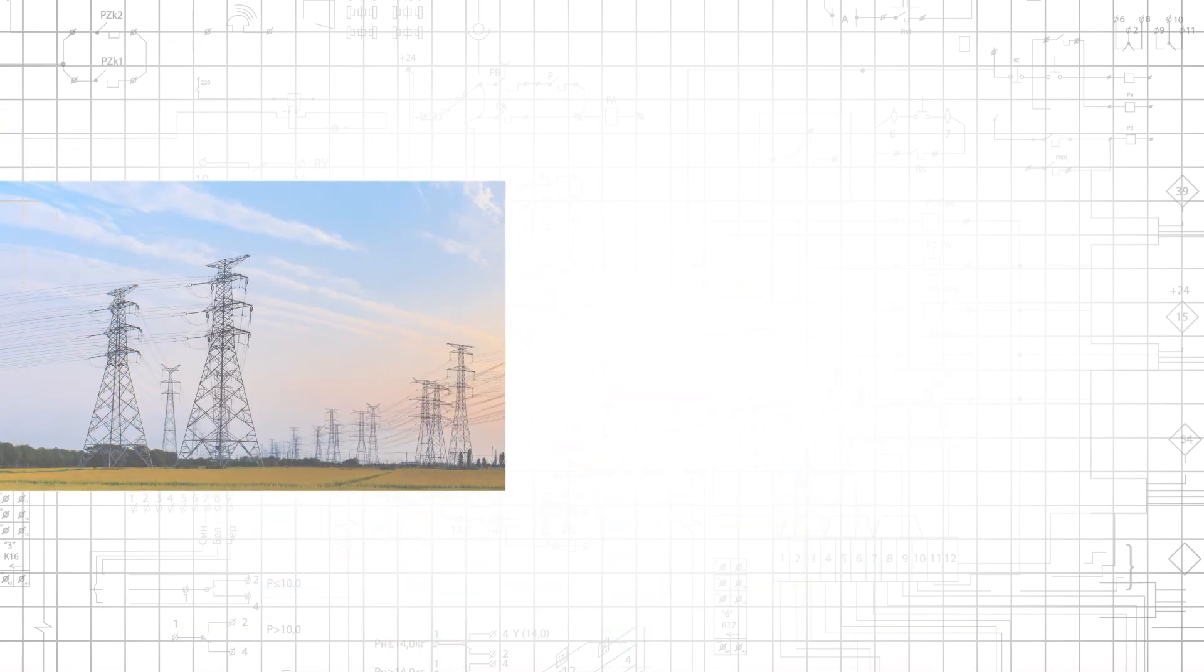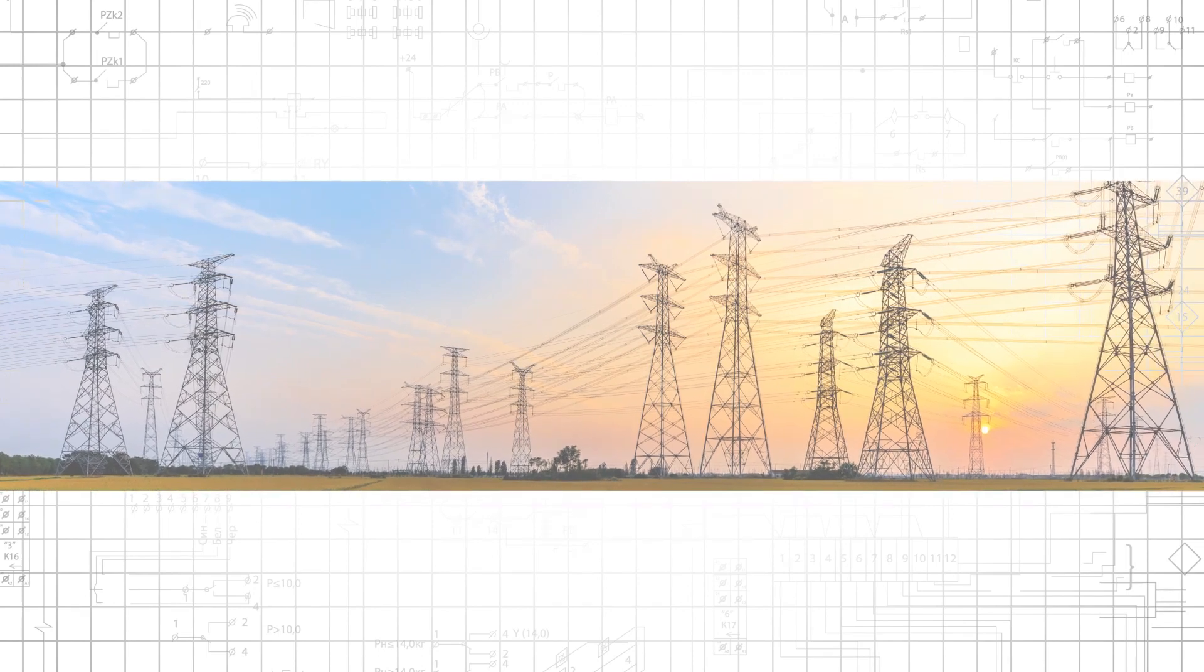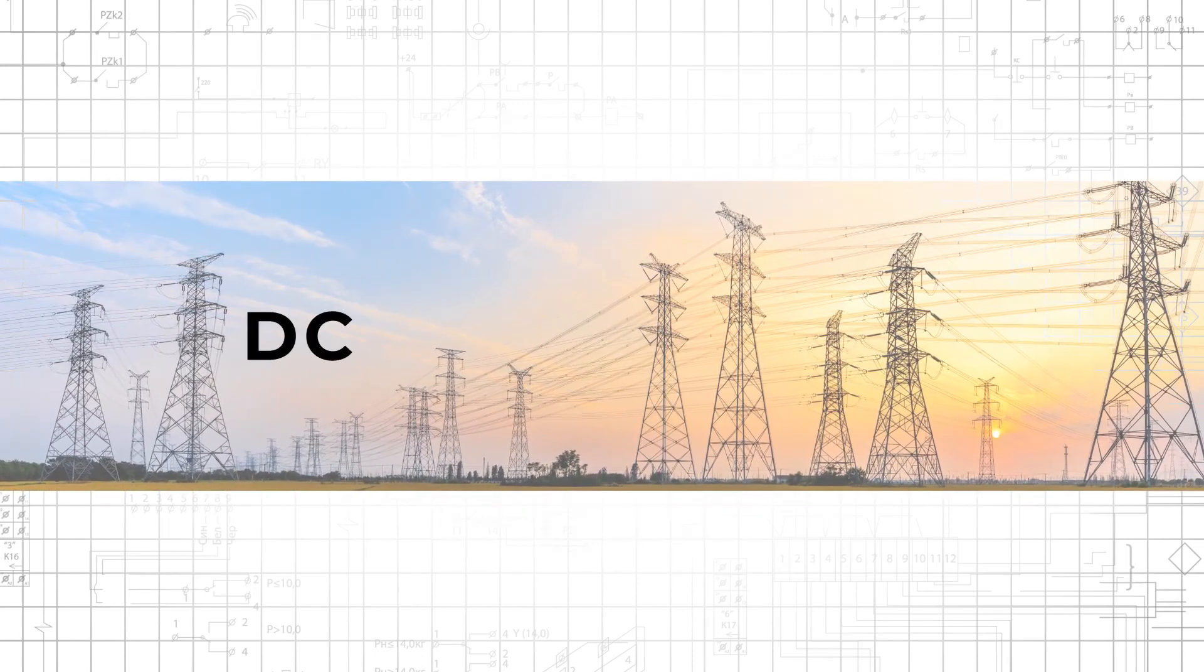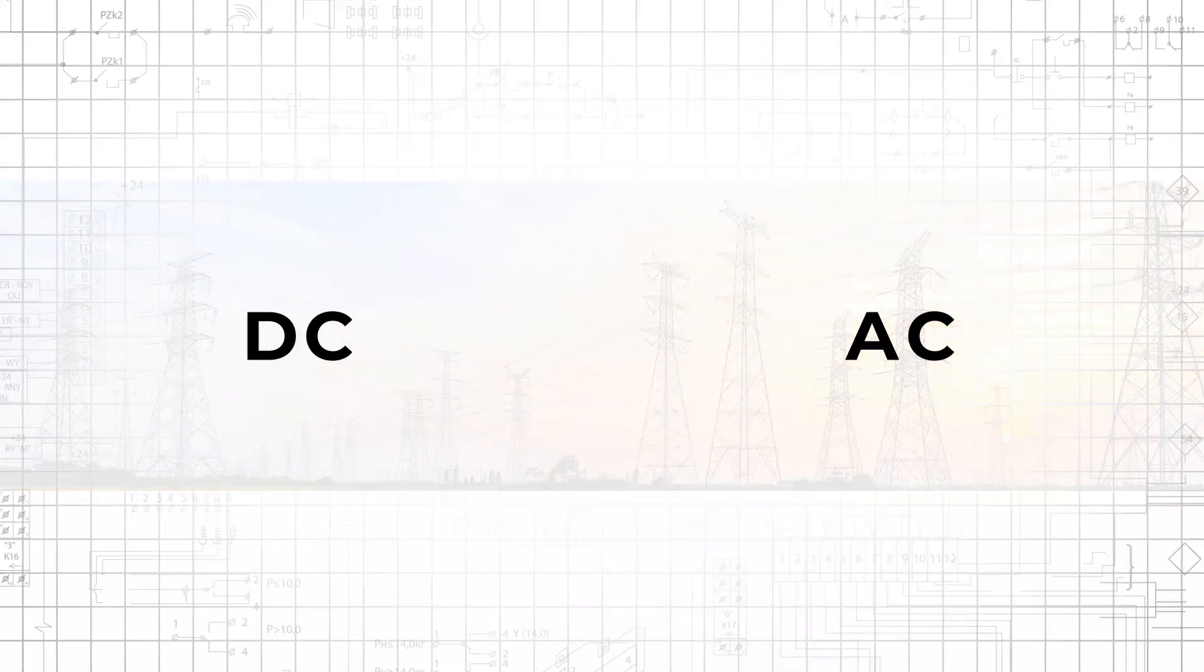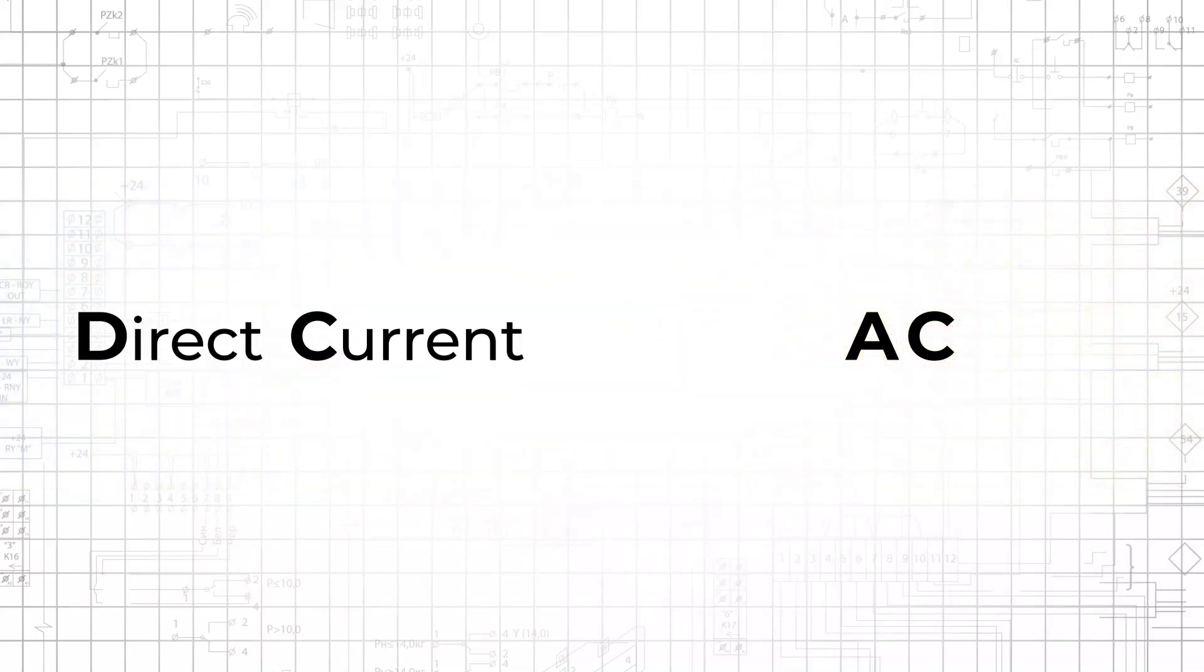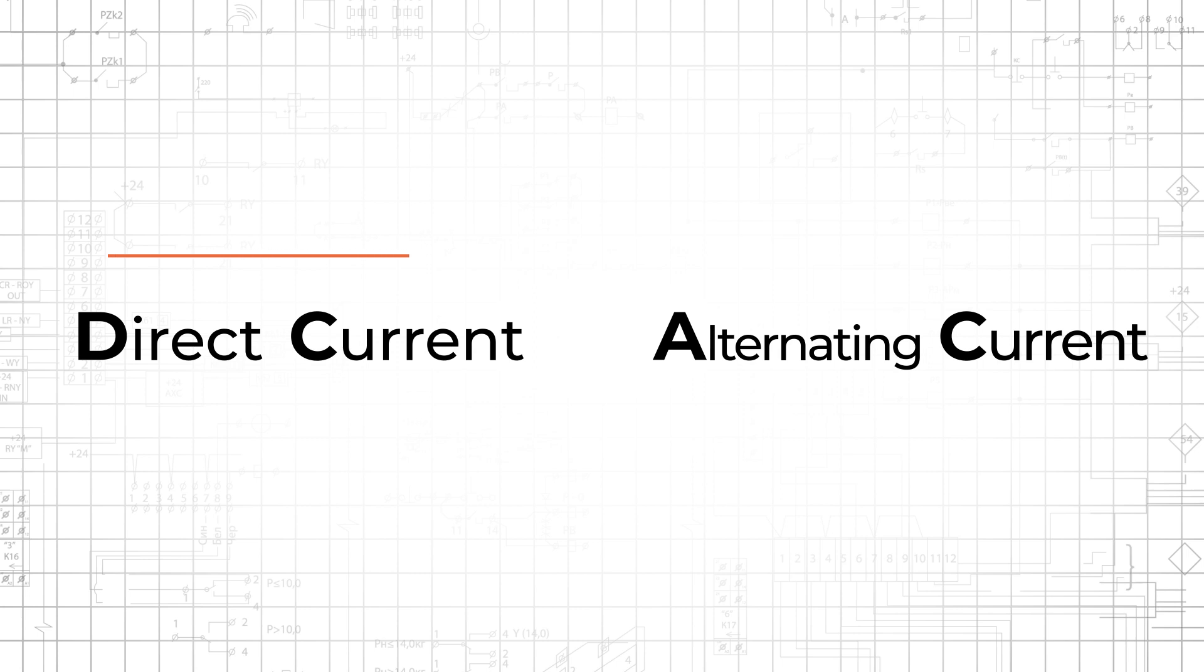Electrical signals come in an endless variety of shapes and sizes, but perhaps the most fundamental categorization is that of DC vs AC. DC stands for direct current, and AC stands for alternating current. Current is direct if it always flows in the same direction, whereas alternating current periodically changes direction.